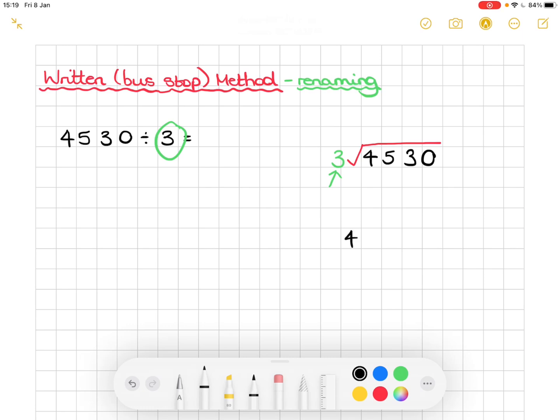Now this doesn't work out equally. So we know that 4 divided by 3 can go equally once, but there is one remainder. There is a leftover of one.